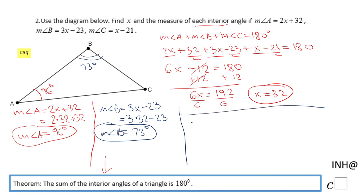Let's find the last angle, the measure of angle C, and that is x - 21. So x is 32, if you remember, minus 21, we end up with 11°, a very, very small angle.